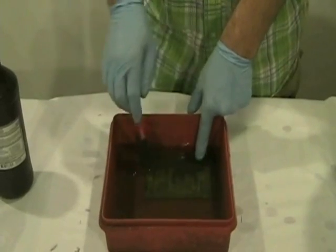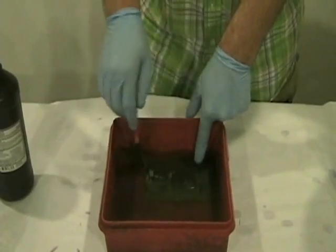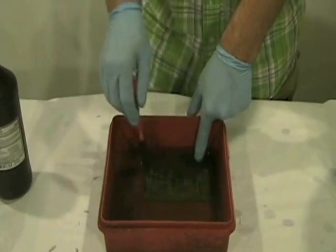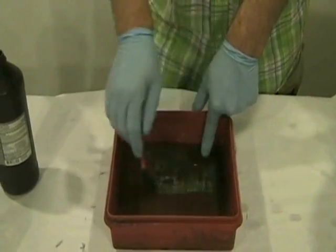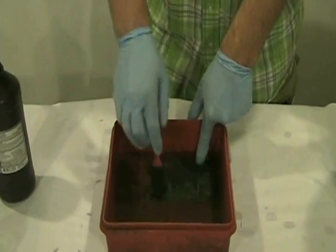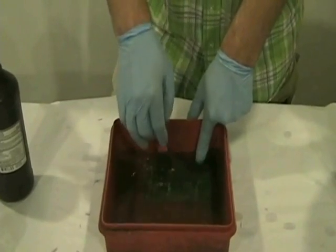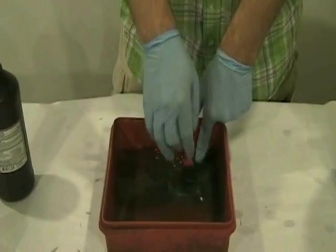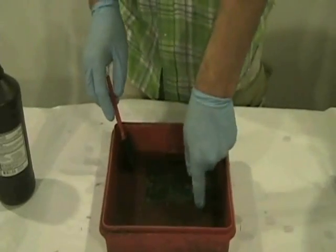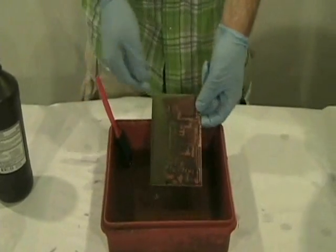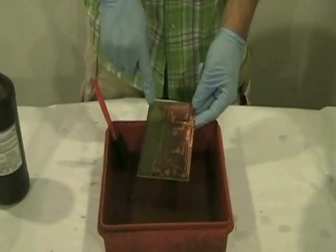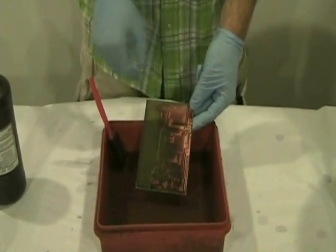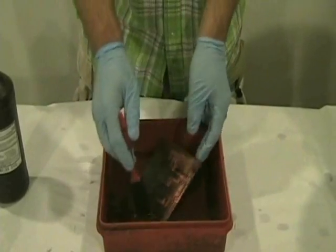You can see it start to etch away here where there's no copper left over here. In these areas there's still copper. At any time you can take it out of here. You can see where I have it etched. It's all clear in between these parts but there's still some copper left in these areas.